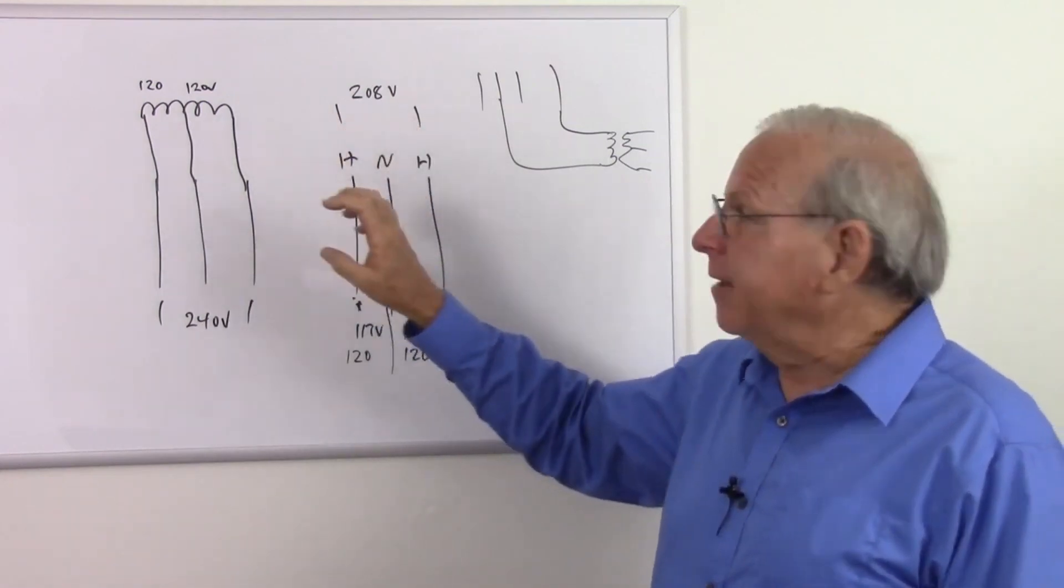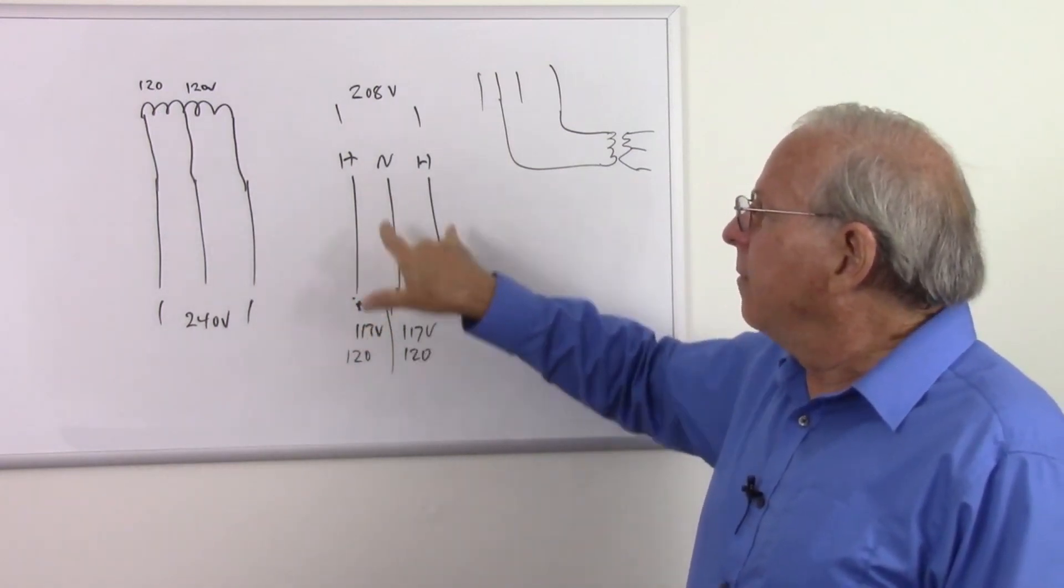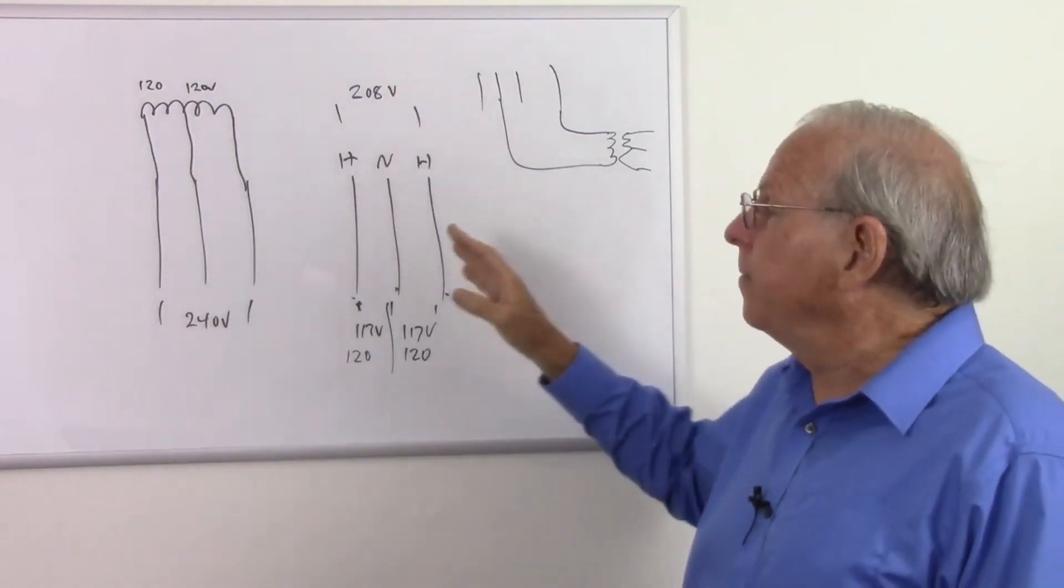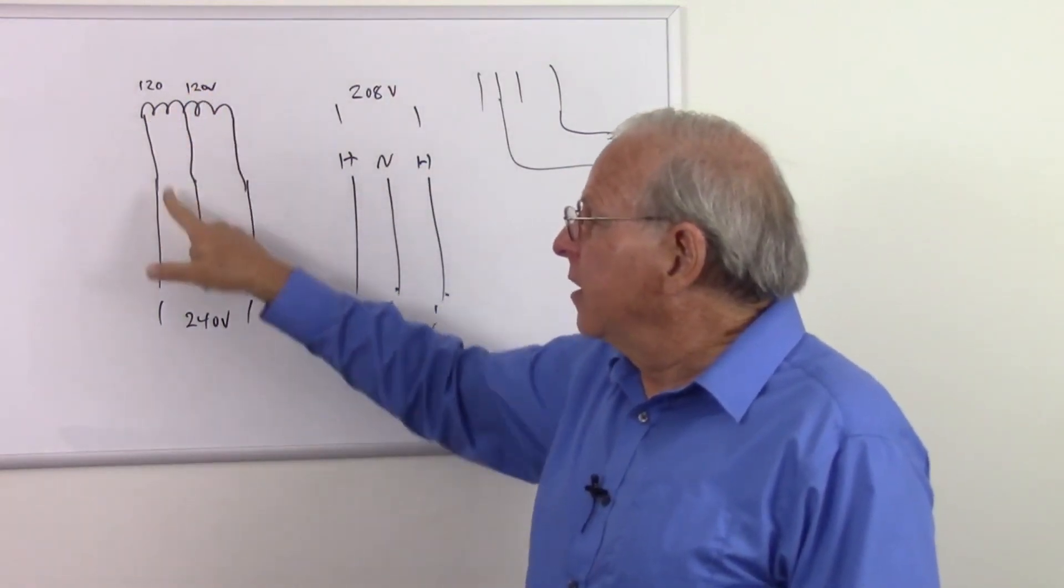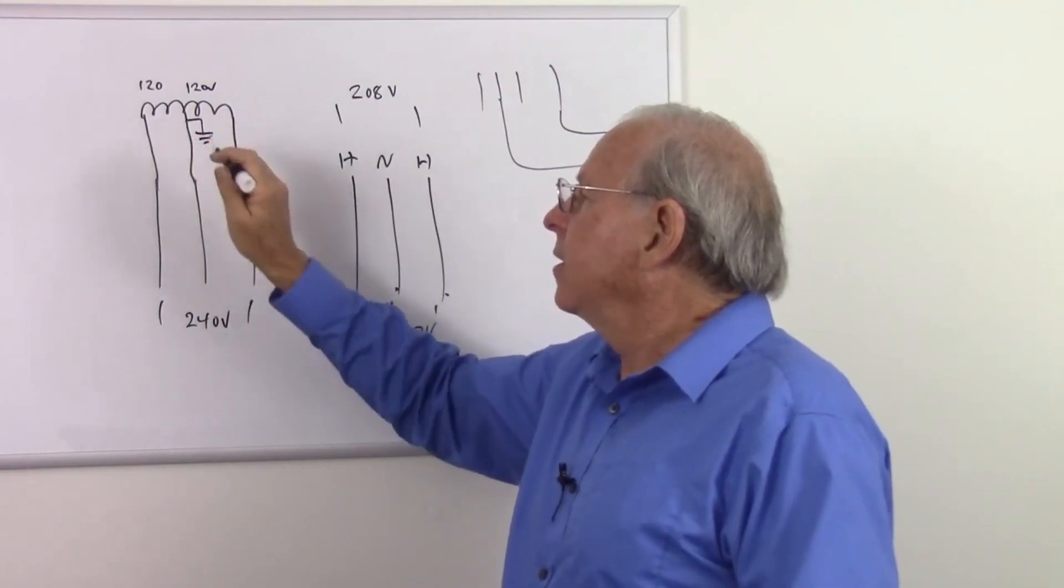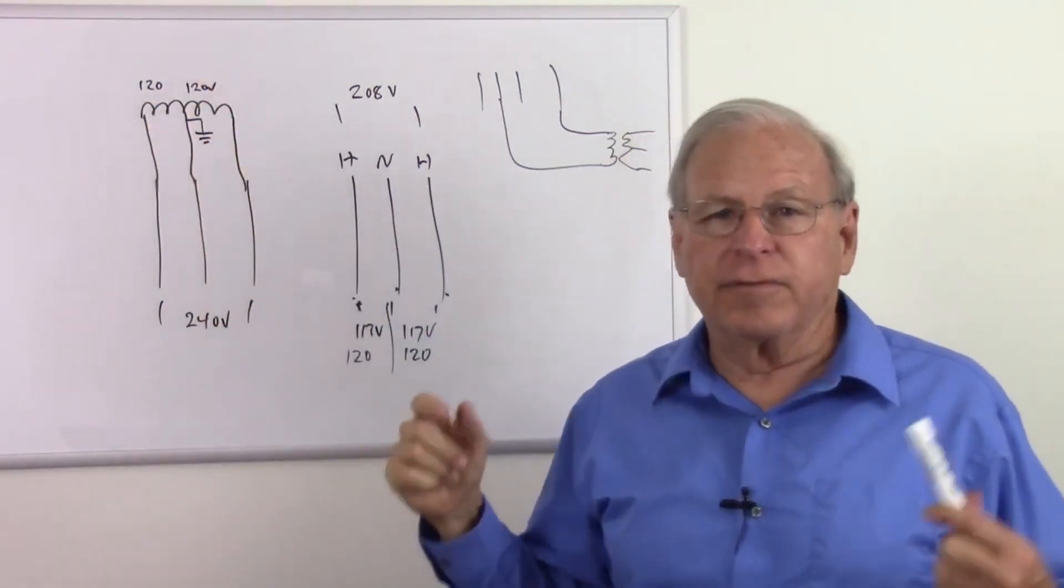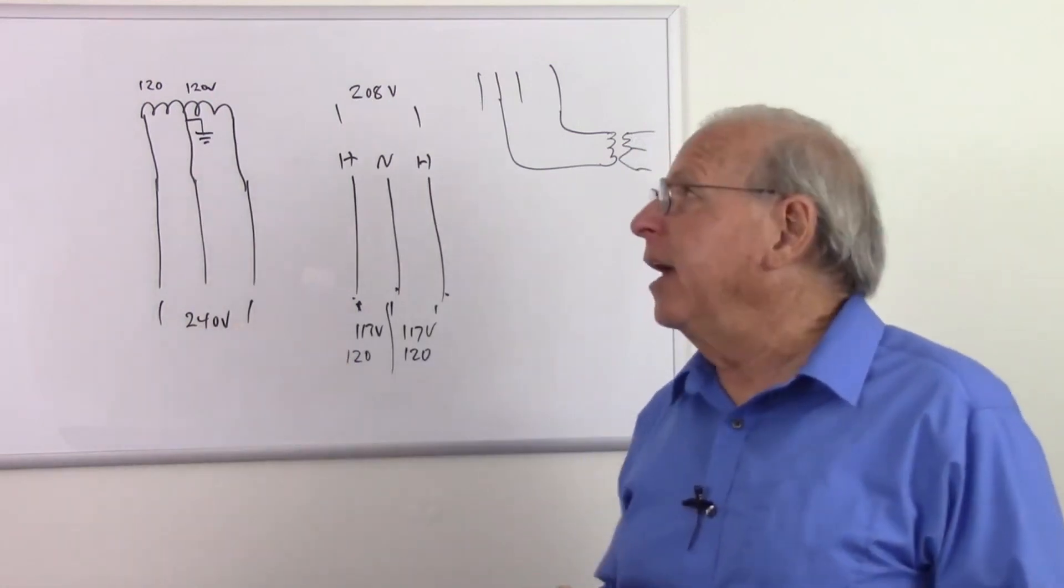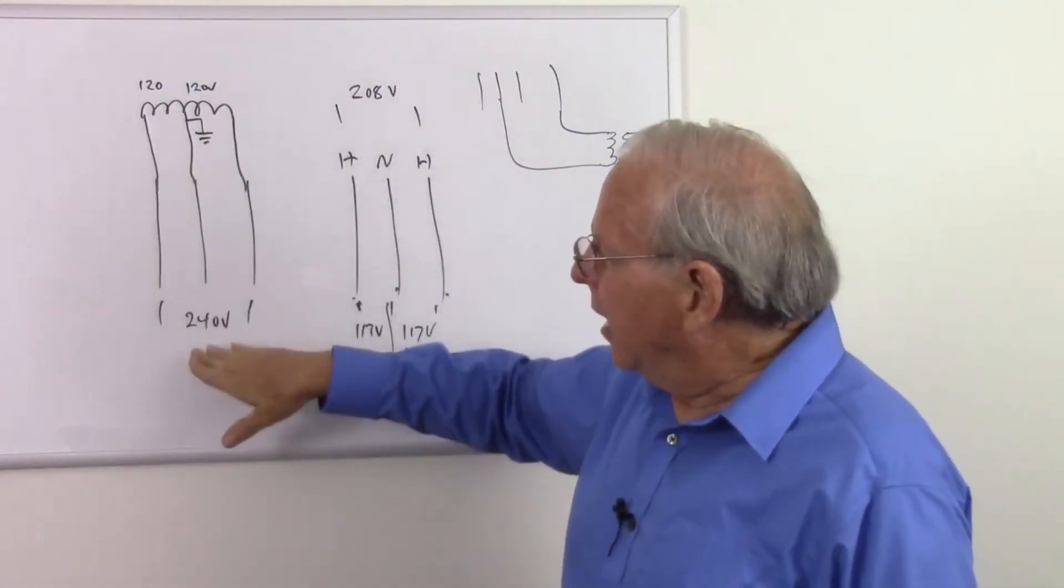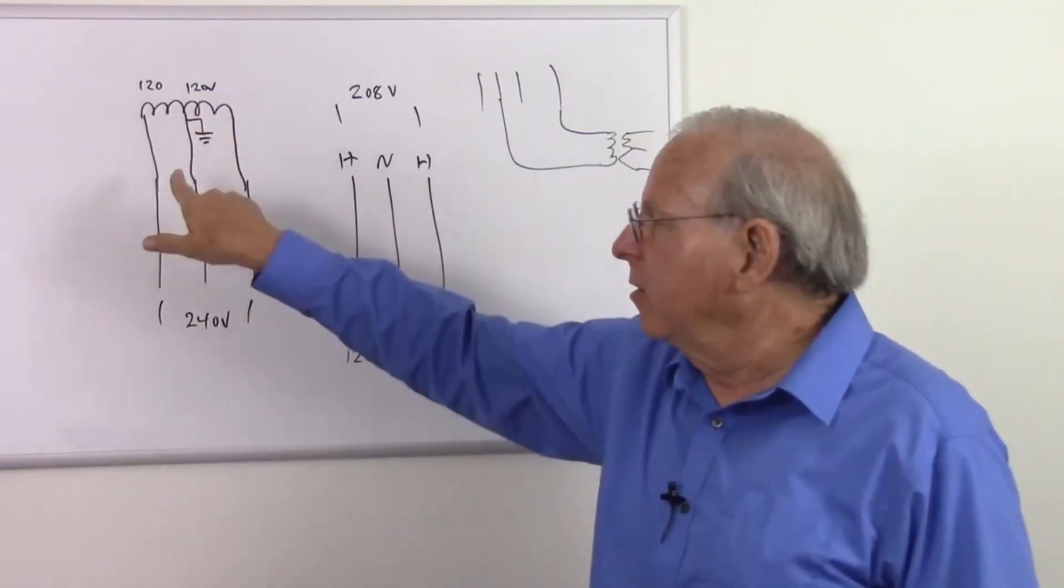So I just wanted to clarify that. So some places will get the two phase, in which case you would have 120 between the hot and the neutral, but only 208 between the other two because of the 120 degree phase difference that I explained in the other video. But when you get the split phase or the single phase, you're going to have just single phase power with a neutral coming down the middle. Of course, this is going to be grounded somewhere to make that work as it should. And so now we have 120, 120, or 240, or in the case of my area, that'd be 117, 117, and 236. Or did the math wrong. I can't do math in my head to save my life. But you would have twice the voltage across the two rails that you do from the hot to the neutral.